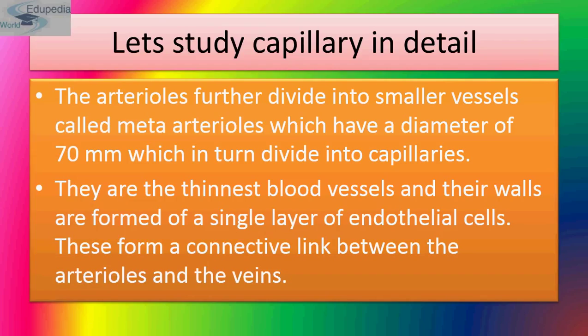Now comes capillaries. Arterioles are the smaller branches of arteries. They further divide into smaller vessels called meta-arterioles, which have a diameter of around 70 micrometers, and these in turn divide into capillaries. Capillaries are the thinnest blood vessels and their walls are formed of a single layer of endothelial cells. They form a connective link between arterioles and veins.